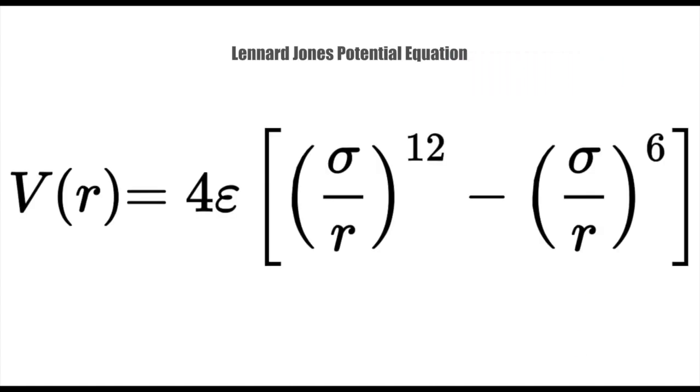Now, let's take a closer look at the actual formula for the Lennard-Jones potential. The potential energy, V of R, as a function of the distance R between two particles, is given by this following equation. Where sigma is the distance at which the potential energy is zero, and epsilon is the depth of the potential well, indicating how strong the attraction is at the equilibrium distance. The R represents the bond length, or the distance between the two atoms.